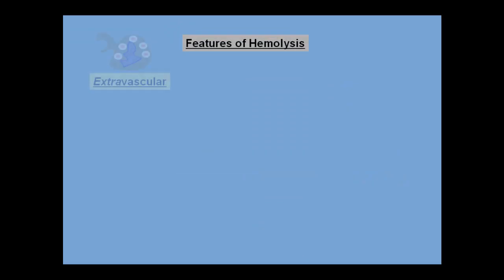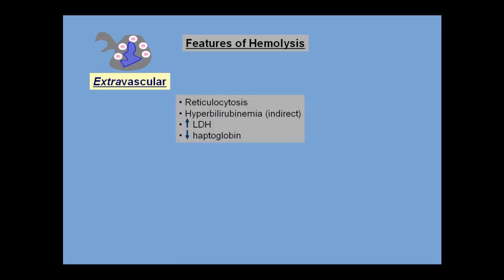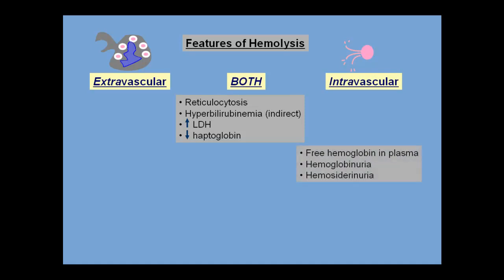In summary, when hemolysis is primarily accomplished by macrophages, it is called extravascular and is characterized by anemia with elevated reticulocytes, indirect hyperbilirubinemia, increased plasma LDH, and decreased plasma haptoglobin. The same features are present in intravascular hemolysis, with the addition of free hemoglobin in the plasma, hemoglobinuria, and with time, hemosiderinuria.